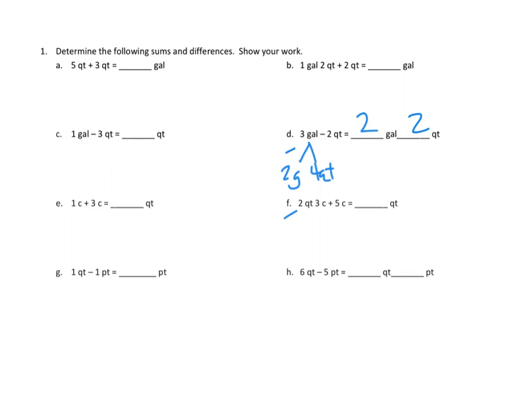Let's take a look at problem number 1F. Problem number 1F asks us, what if we had two quarts and three cups, and we added five cups? How many quarts would we have then? Well let's try that out. If we added the cups together, that's three cups plus five cups, that would make eight cups, and we have two quarts.